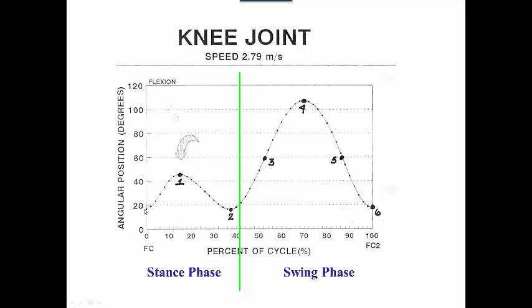So at foot contact, your knee is not extended. It's flexed about 20 degrees. And then you go into more knee flexion. So you go from 20 degrees of knee flexion to 40 degrees. So you are flexing your knee. At that point, the velocity is zero.